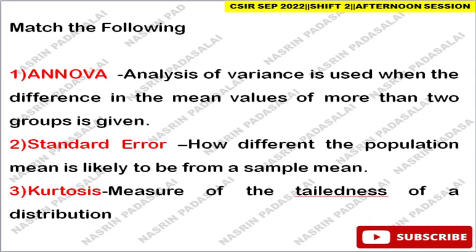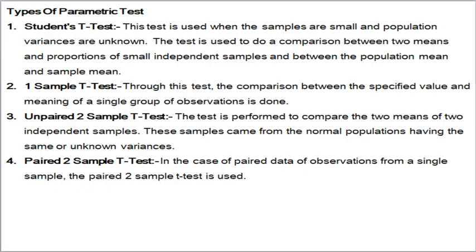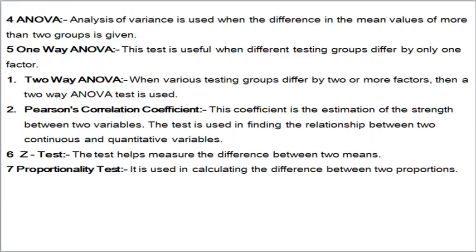Next is regarding statistical procedures — I don't know the entire question but it was a match-the-following. ANOVA (analysis of variance) is used when comparing differences in mean values of more than two groups. Standard deviation is how different the population mean is likely to be from the sample mean. Kurtosis is a measure of the peakedness or flatness of the distribution.